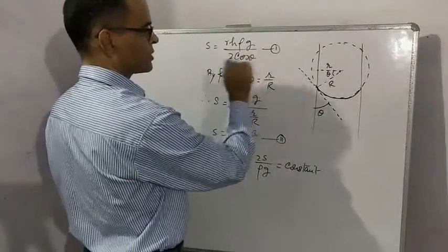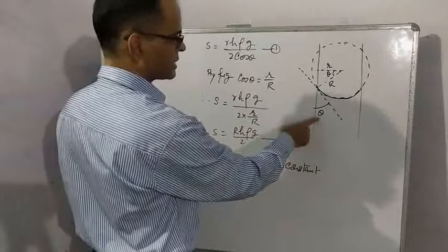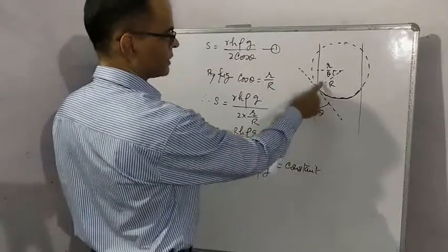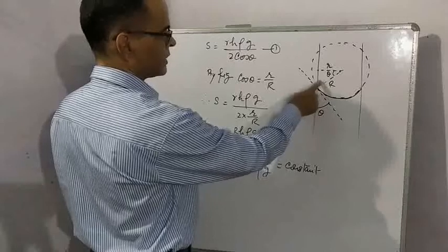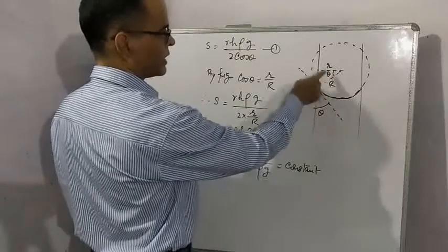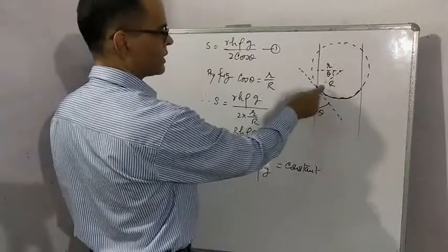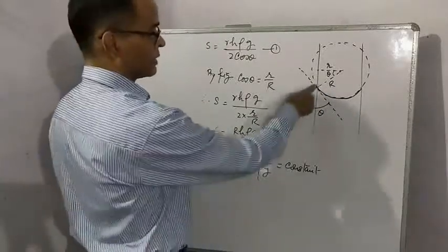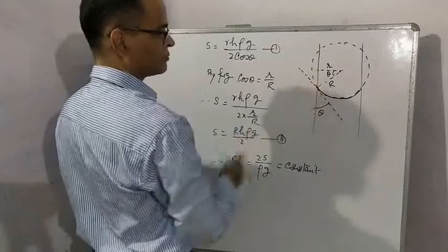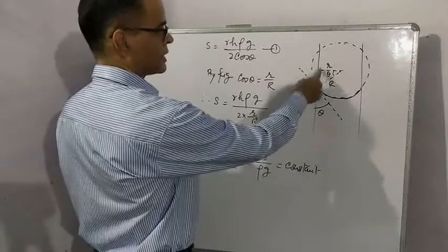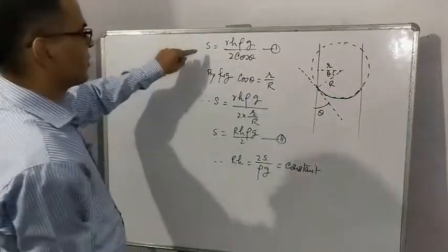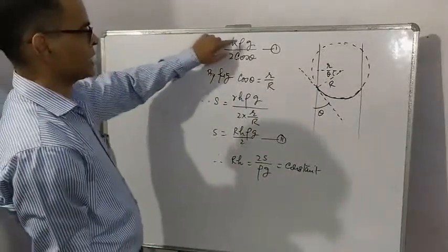Theta is the angle of contact. This angle is theta, this angle is 90 degrees. Angle between radius and tangent is 90 degrees, so this angle is 90 minus theta. Since it is 90, this angle is also theta.